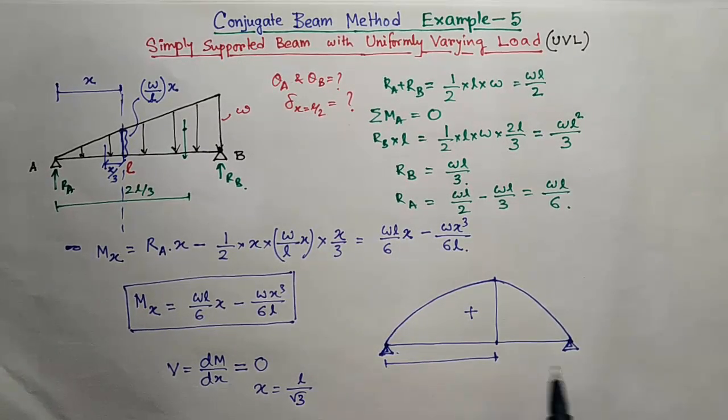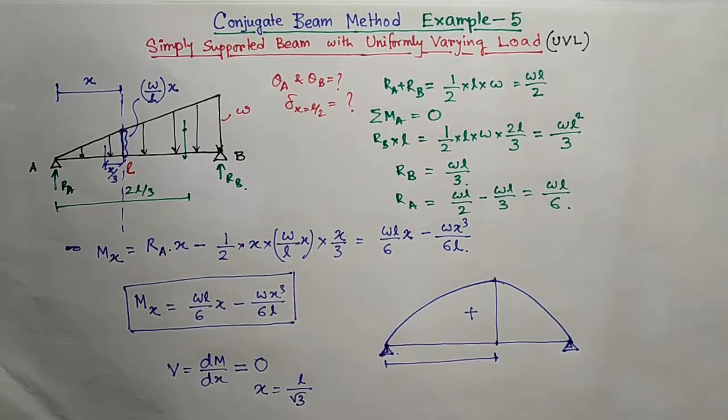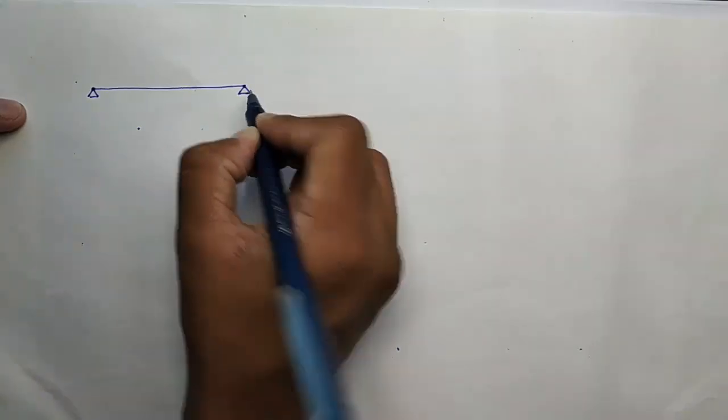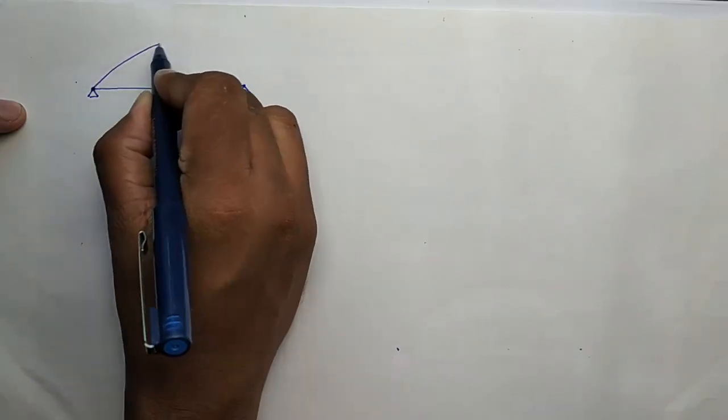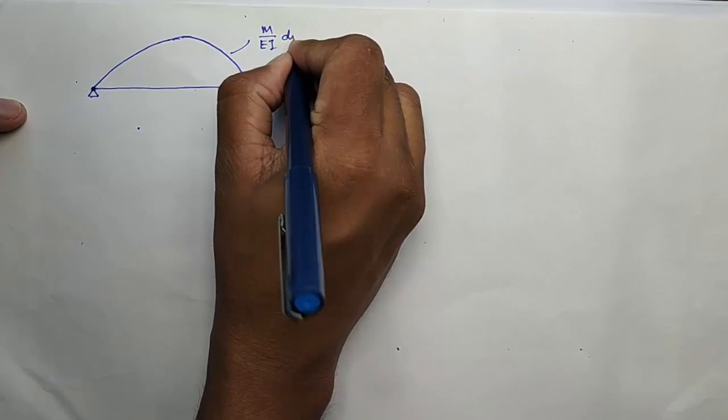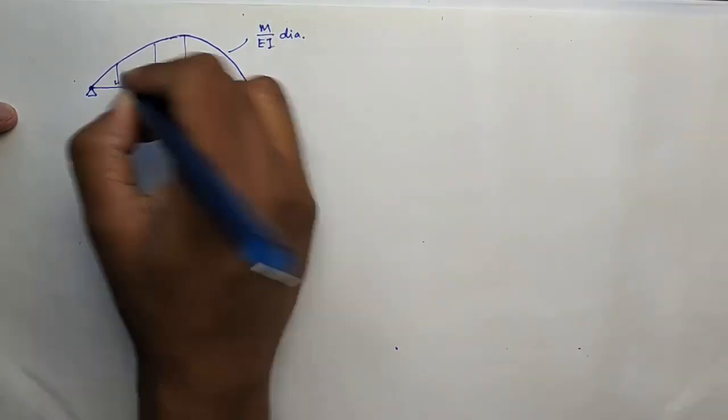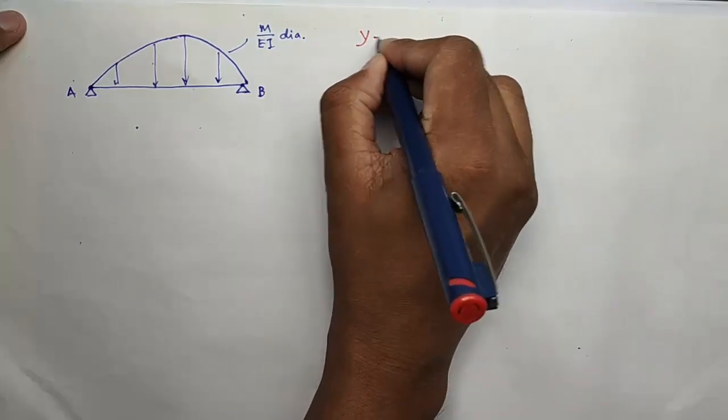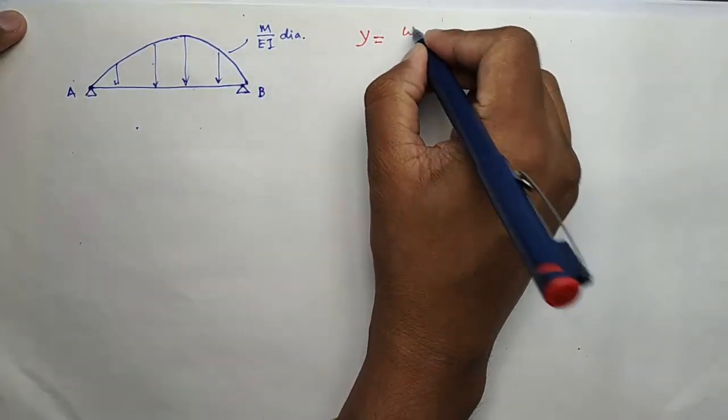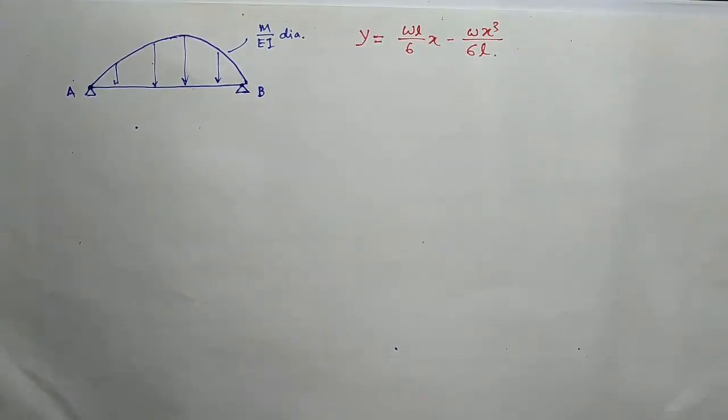In our conjugate beam, the loading will be downward. For a simply supported beam, the conjugate beam is also a simply supported beam because the hinge support remains hinge in the conjugate beam. So draw the loading. It is the M by EI diagram. It will be loading like this. In the moment equation, let us write down Y. This is the equation of this curve.